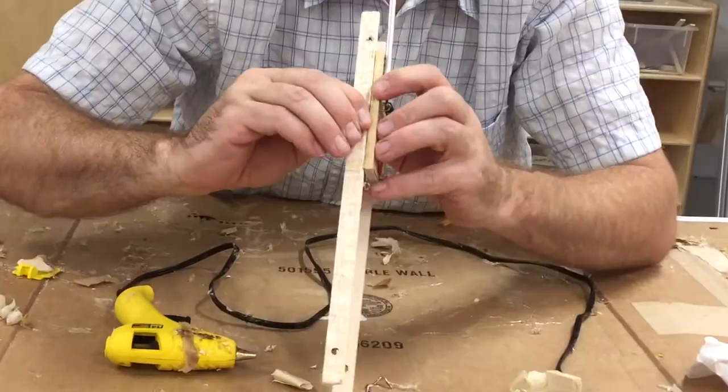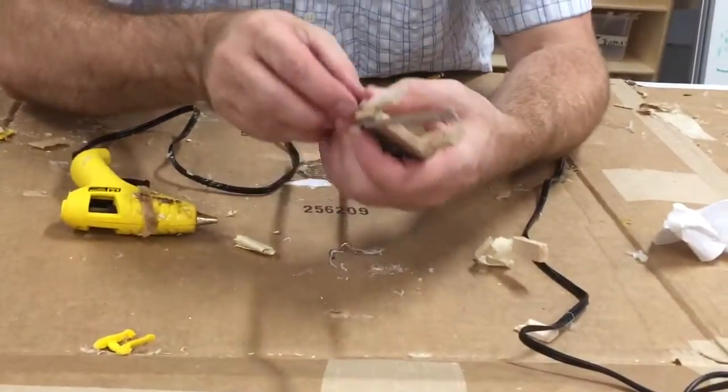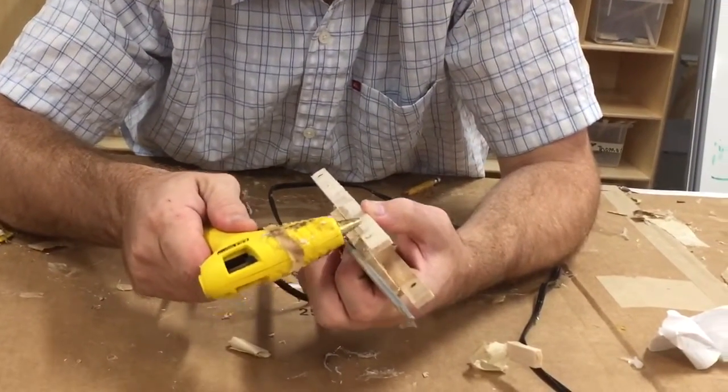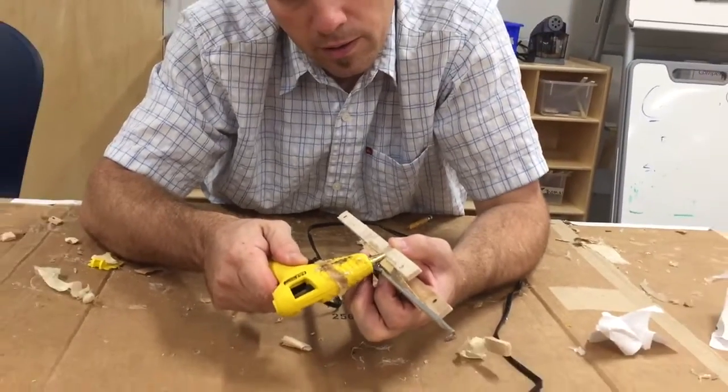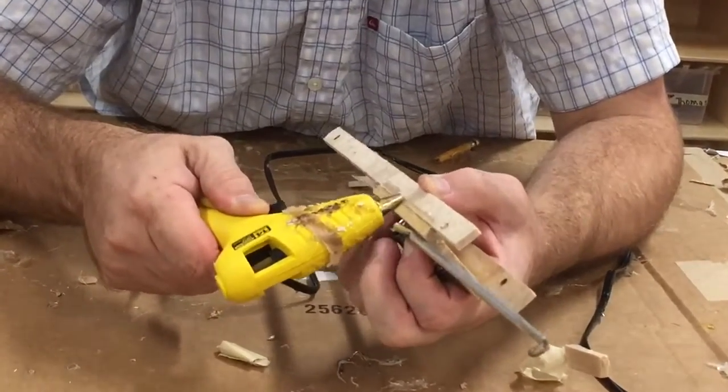Alright, now this time I'm lining it directly up with the edge. Straighten it out. And now I can heat some glue and put it right in here. I'm kind of shoving it back into this seam.